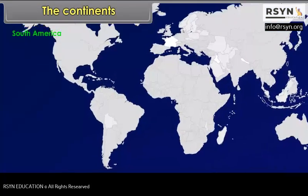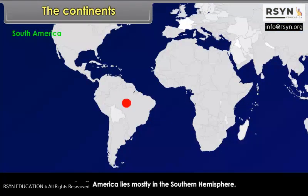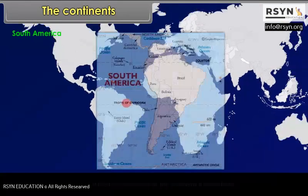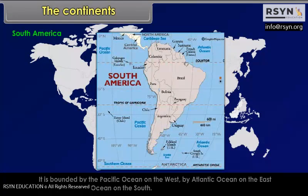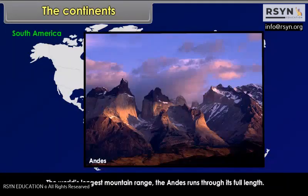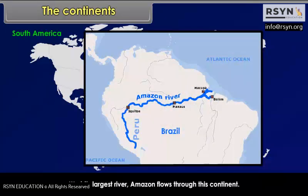South America lies mostly in the southern hemisphere. It is bounded by the Pacific Ocean on the west, the Atlantic Ocean on the east, and the Antarctic Ocean on the south. The world's longest mountain range, the Andes, runs through its full length. The world's largest river, the Amazon, flows through this continent.